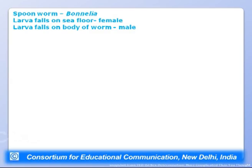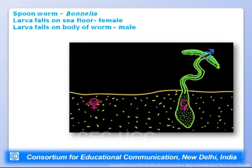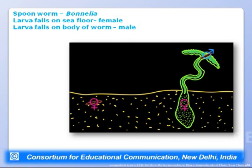Another example is the spoon worm Bonellia. When its larva falls on the sea floor, it becomes a female. But when the larva falls on the body of another worm, it becomes a male. This is position-dependent sex determination — the landing site of the larva determines its sex.